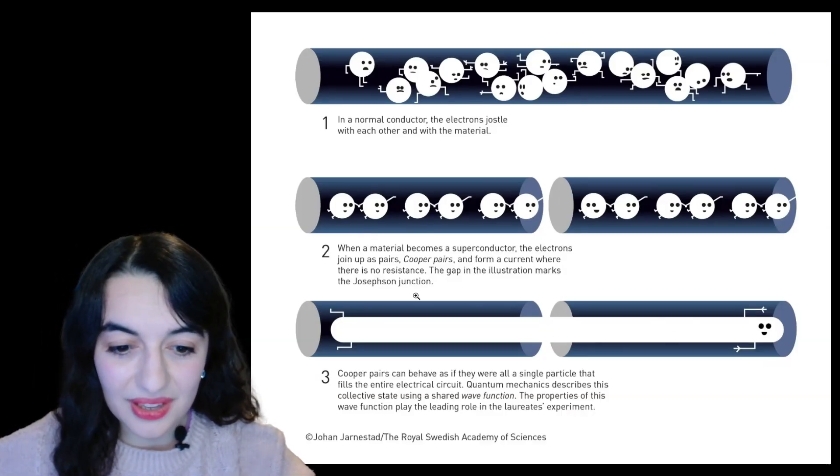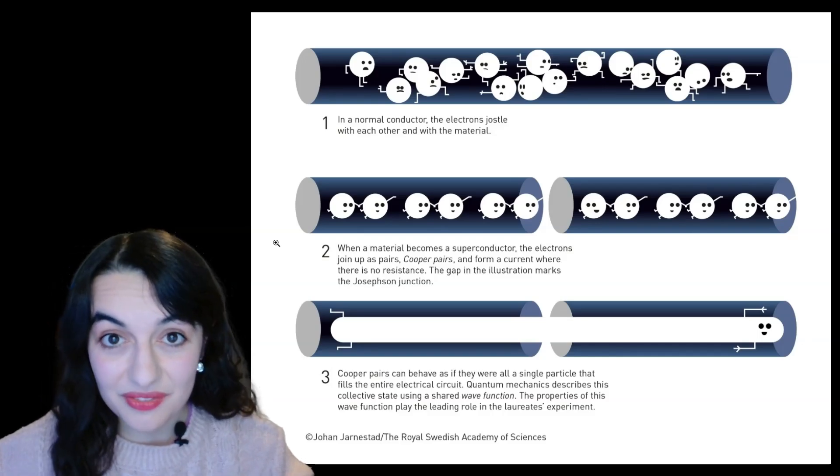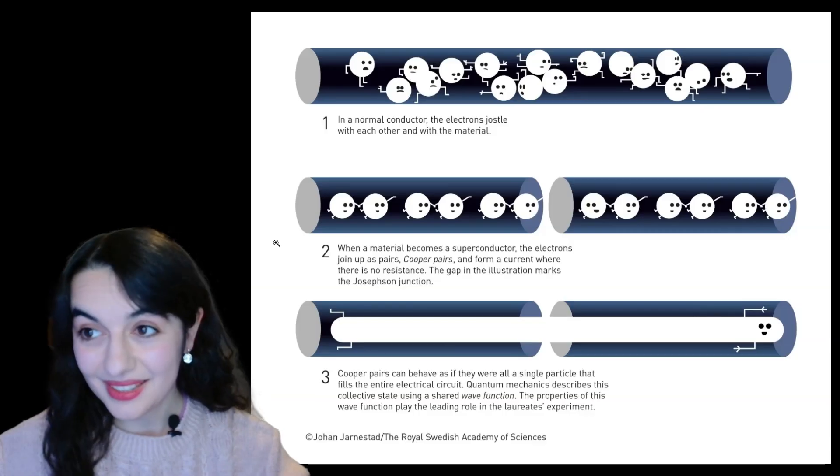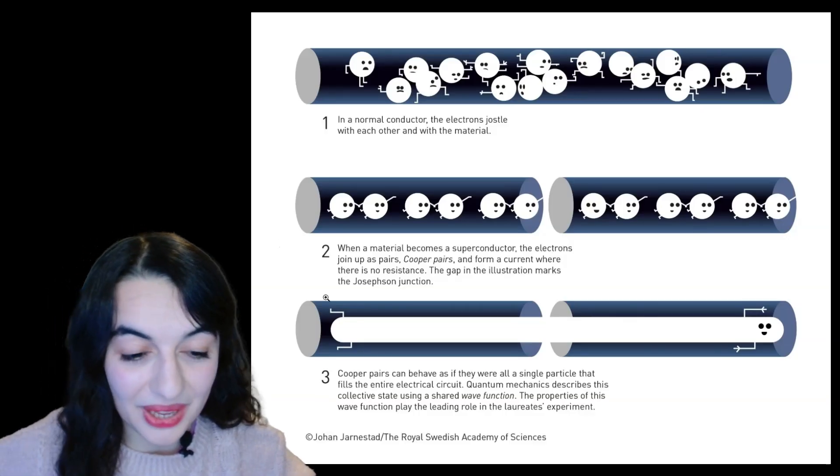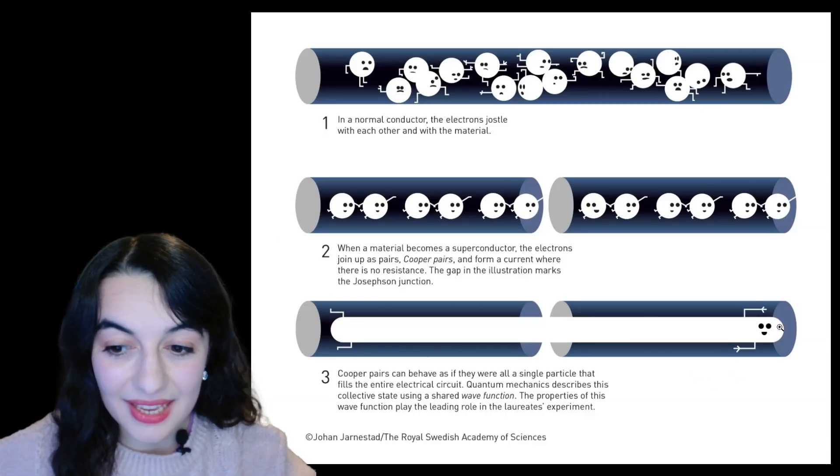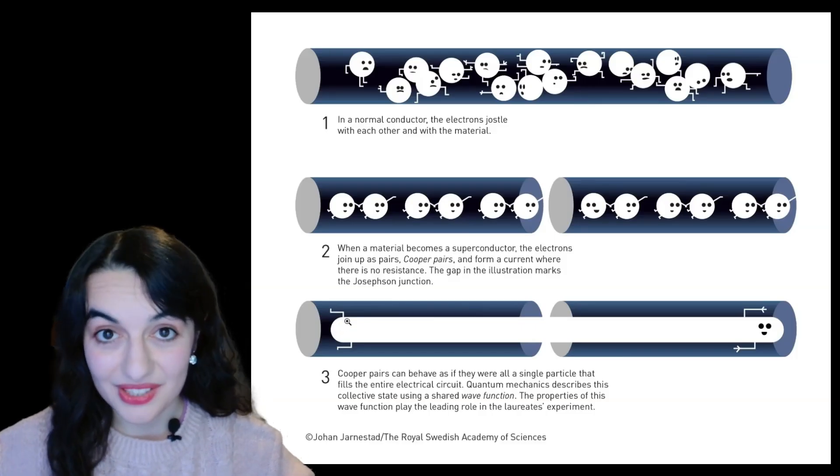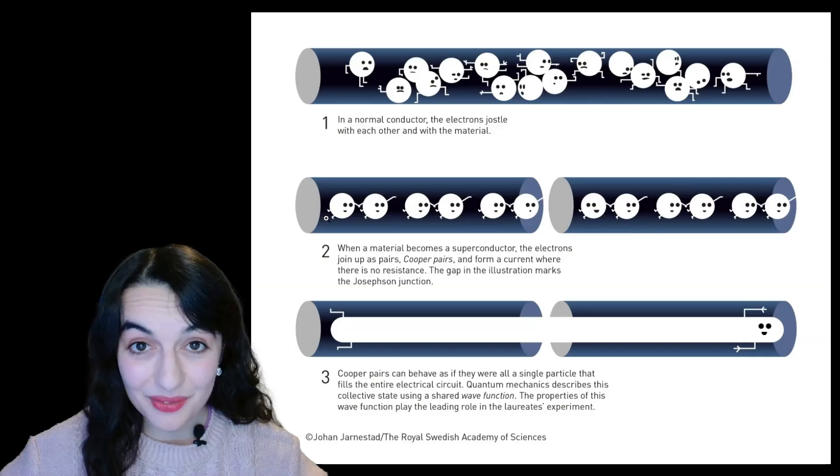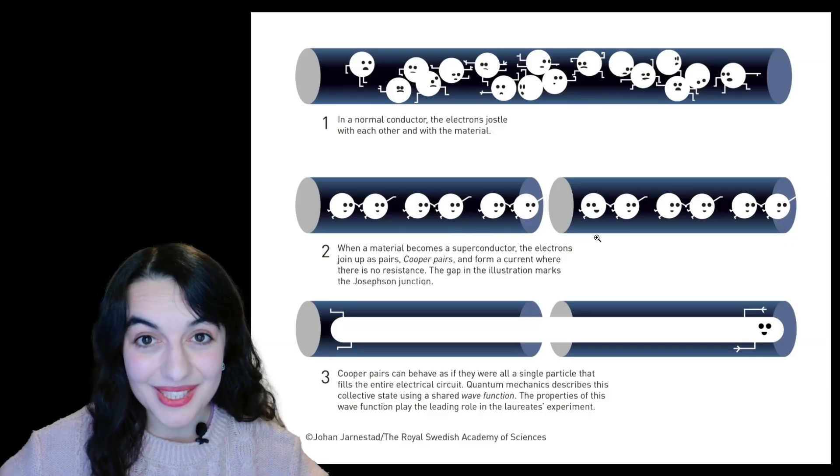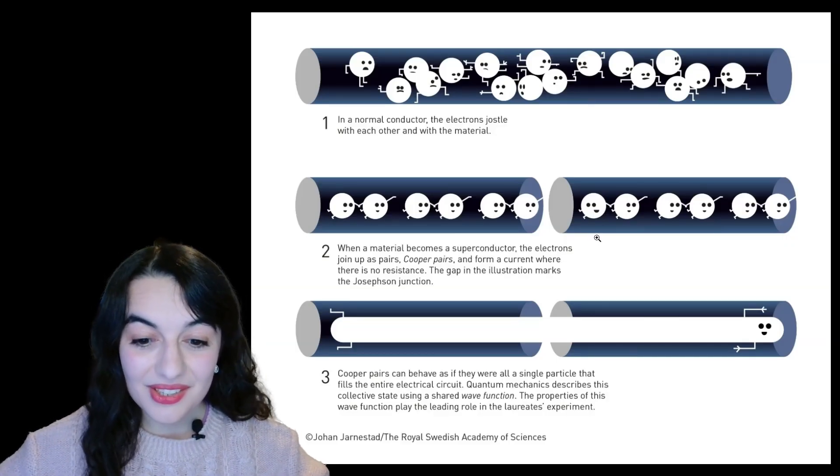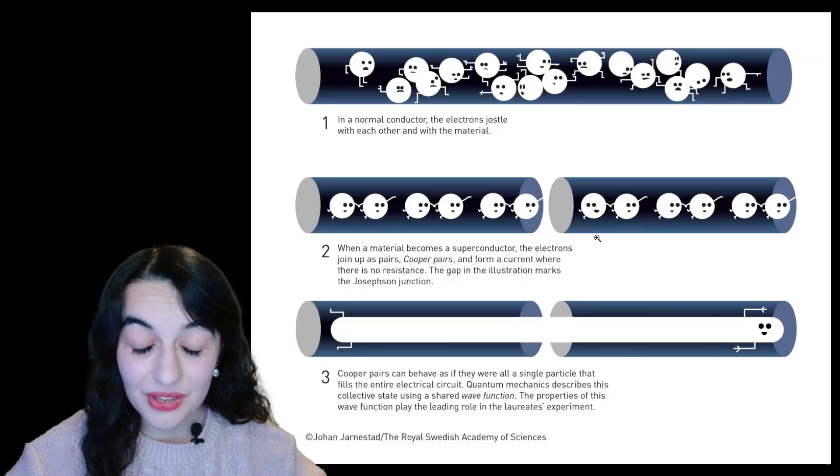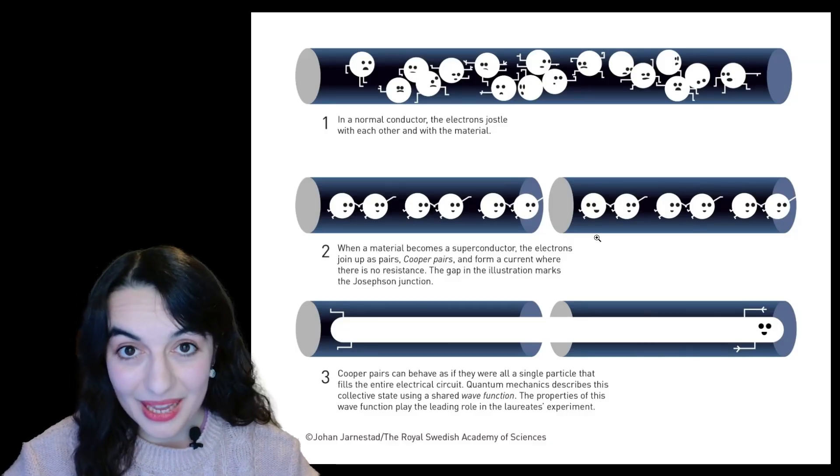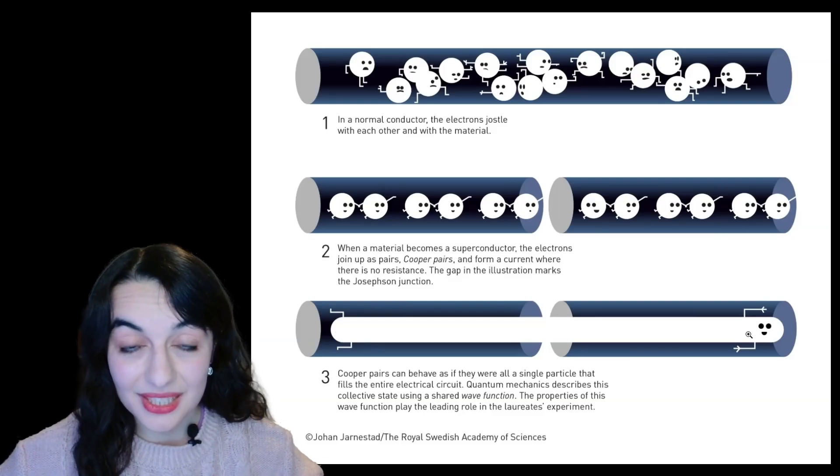So essentially, they behave as an artificial atom. This research led to superconducting qubits, as I'll discuss a bit more in a bit. But they behave as an artificial atom. To demonstrate that these billions of Cooper pairs actually behave as a single quantum particle, the researchers did a few experiments to show quantum effects that can only be explained if it's really behaving as a single particle.